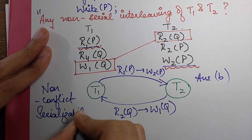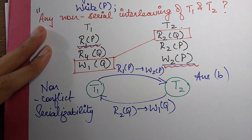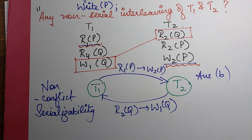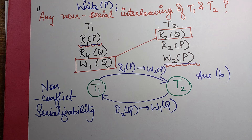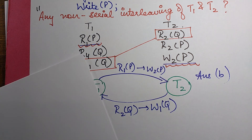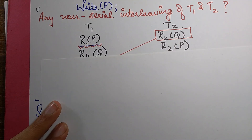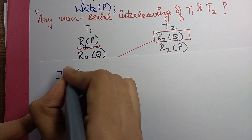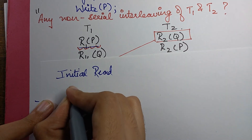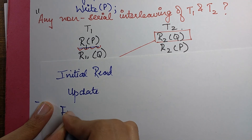Since we are preparing for GATE, I advise all of you: whenever you get non-conflict serializability as the answer, also try for view serializability, because you can get the same question with view serializability in your upcoming GATE exam. We should not stop at an incomplete answer. For view serializability I need to check three things: initial read, update, and final update.